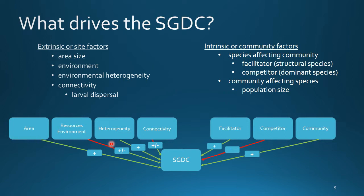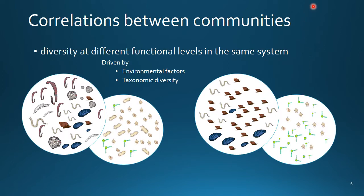Extrinsic factors or site factors can be area size, environmental factors, heterogeneity, and connectivity. The intrinsic factors or community factors can be a dominant species in the community either facilitating or competing against the rest of the community, or it can be the community affecting the individual species via population size. Correlations can also happen between communities at different functional or taxonomic levels. These can be driven by environment or by causal relationships between species at different levels, for example host-parasite relations.